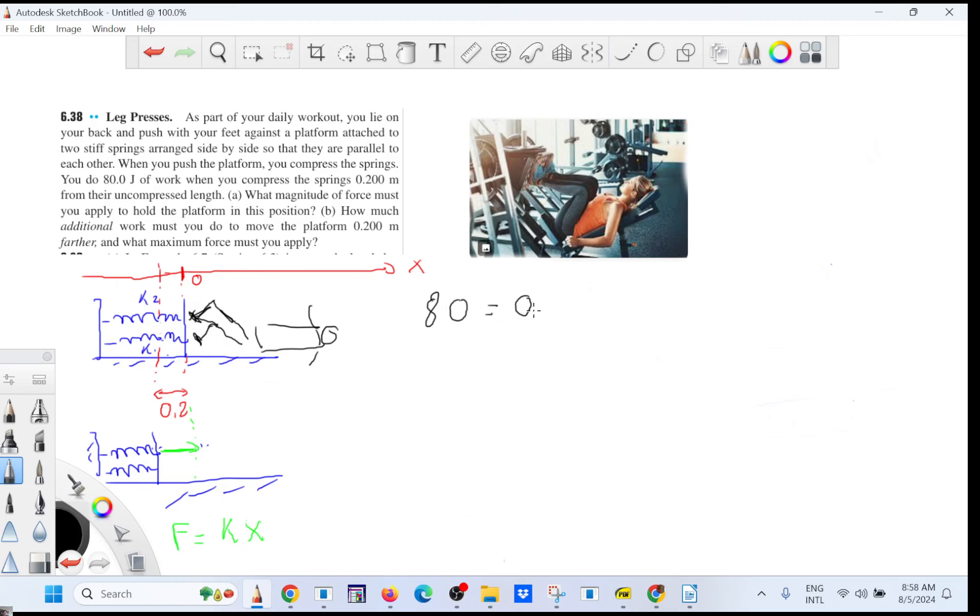So that will be equals to 0.5 K, and then the 0.2 squared. What you cannot do, because the force pushing back is changing with the distance here, it's not a constant force.